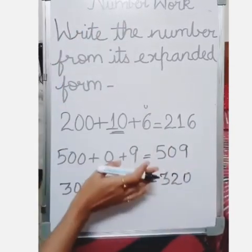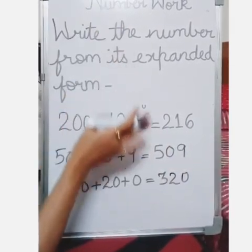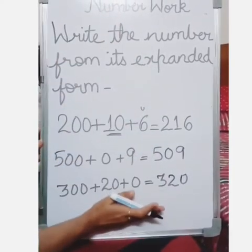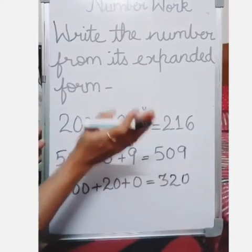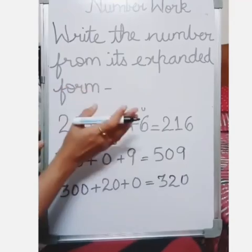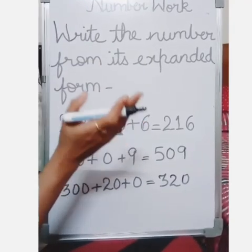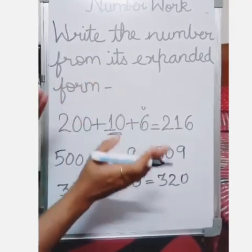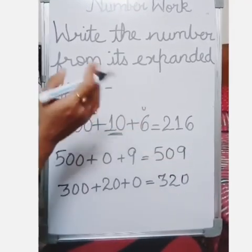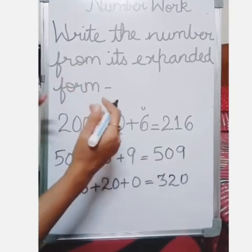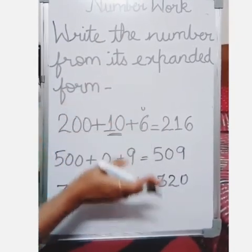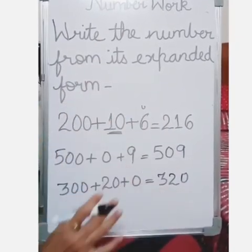With this we complete our number work. The chapter on number work is completed. I am going to give you a homework where you have to write the expanded form of the following numbers, and then write the number from its expanded form. This will be your homework.